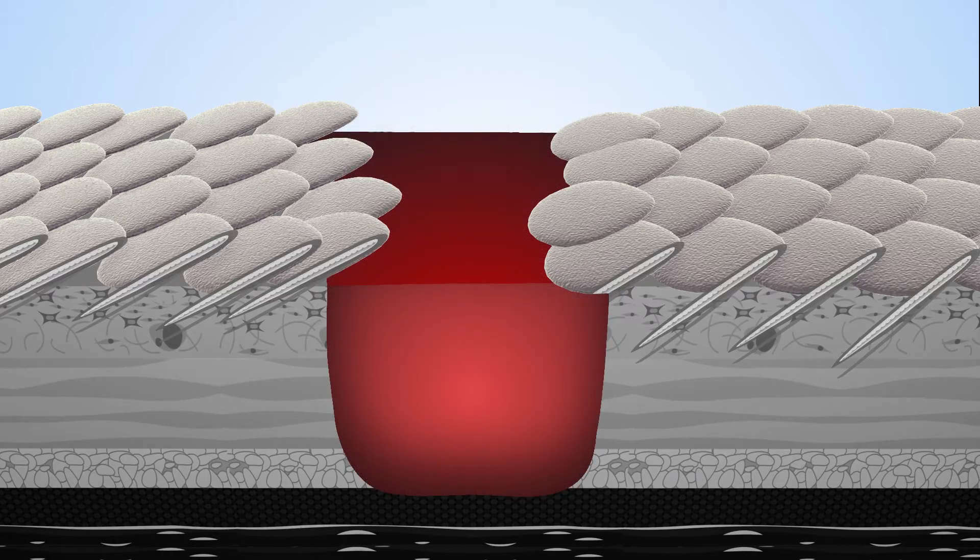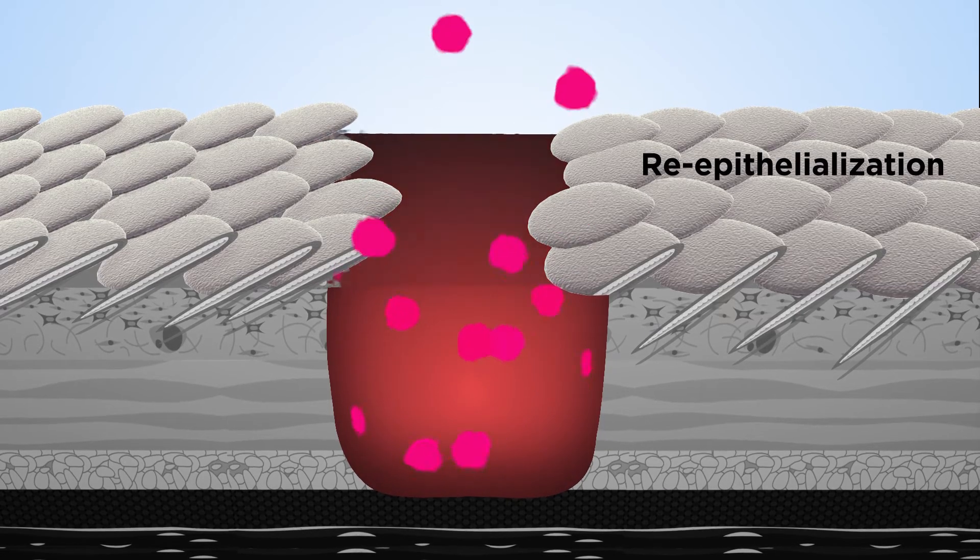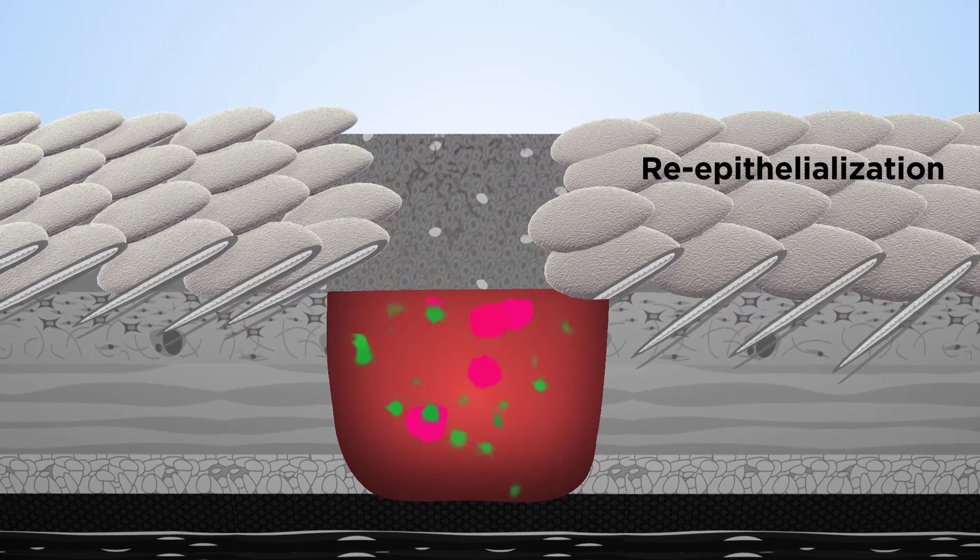In a deep wound, where all the skin layers are damaged, a different response is triggered. Healing takes much longer as several types of tissue must be regenerated. Initially, the fish will bleed. A rapid re-epithelialization occurs, much like with the superficial wound.